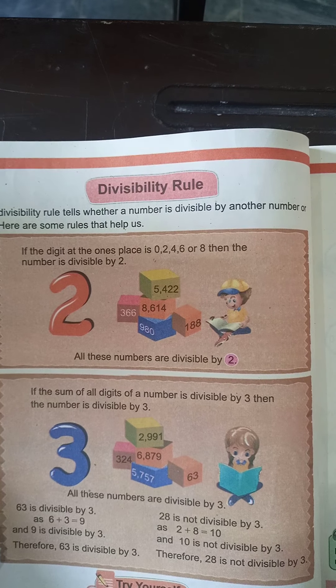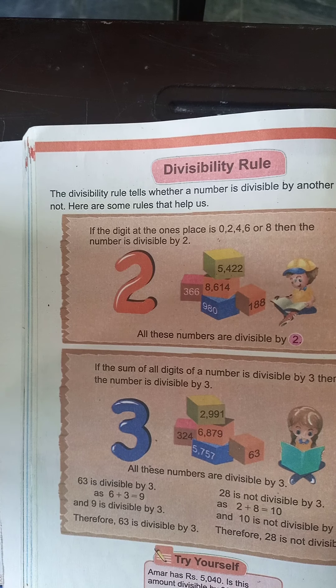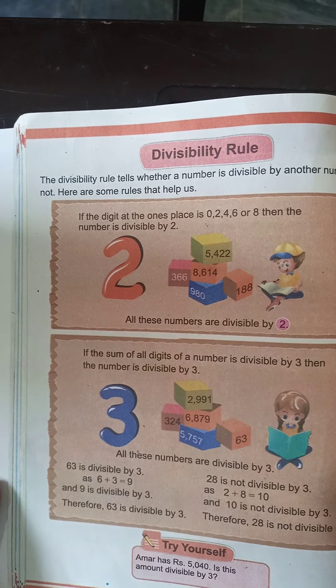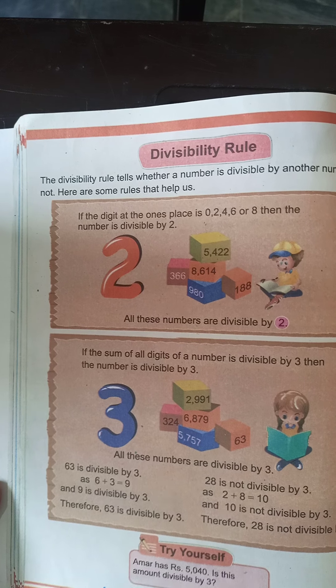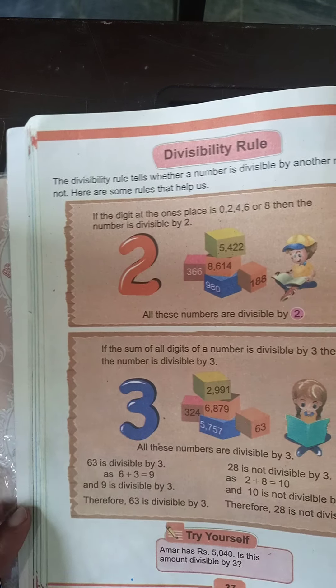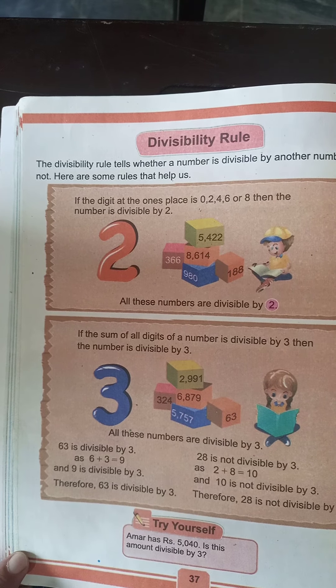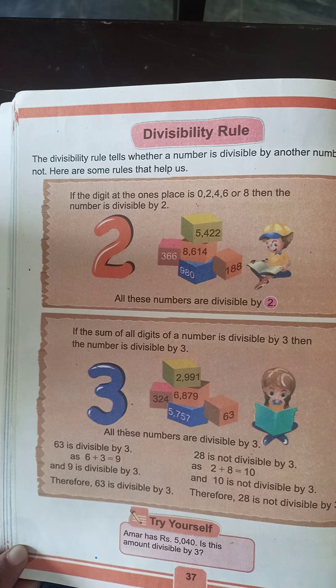Next divisibility rule is: if the sum of digits of the number is divisible by three, then the number is divisible by three. Sum of digits ka matlab hai, koi bhi given question mein jo numbers given hain, aur aapne find karna hai ki three ke table mein wo divisible hai ya nahi. Aap usko bahut long division method se solve karne ki bajaye, aap uska sum find kar saktay hain bahut easily.